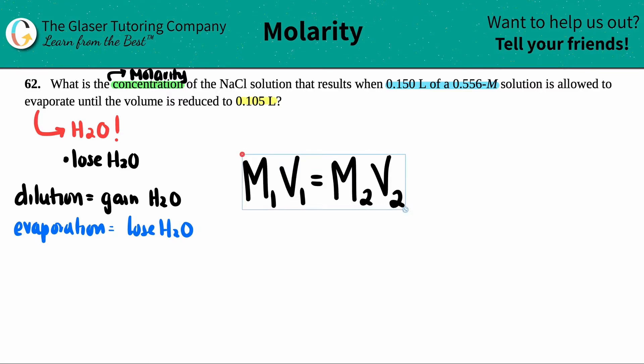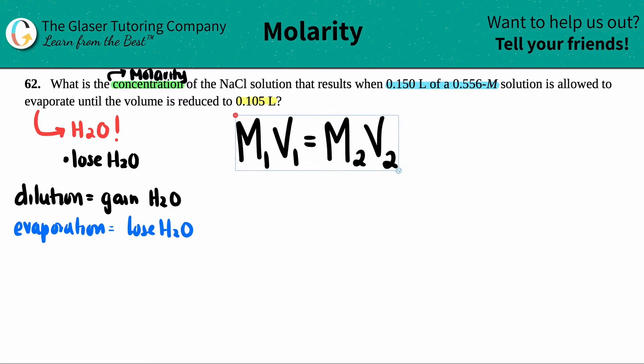The dilution formula is M1V1 equals M2V2. All this is saying is that there's going to be a change in volume, and because of that, your molarity is going to change. However, when you multiply a molarity times a volume, you actually get the moles. So the moles of any solution should stay the same, no matter whether you gain water or whether you lose water. So I can still use my dilution formula here.